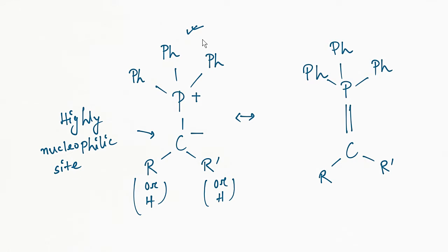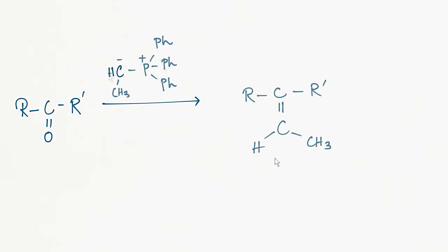When Wittig reagent reacts with ketone and aldehyde, it converts them into alkene by forming a new carbon-carbon double bond. This reaction is called the Wittig reaction, so the carbon-oxygen double bond of a ketone or aldehyde is converted into a carbon-carbon double bond.